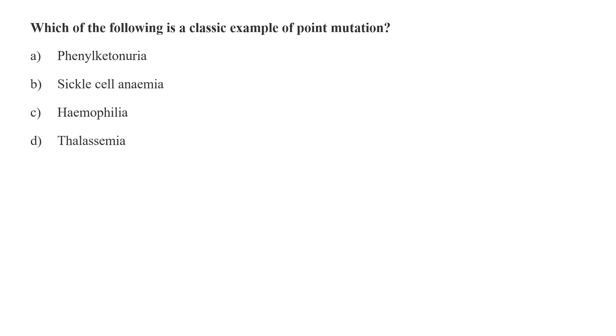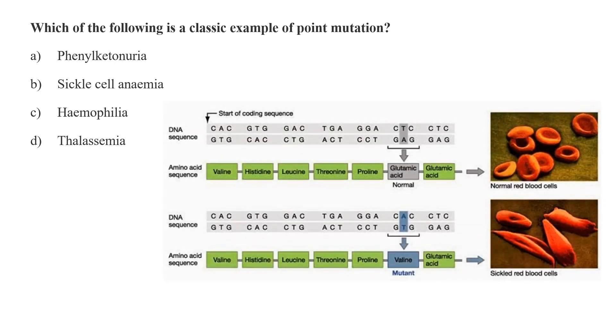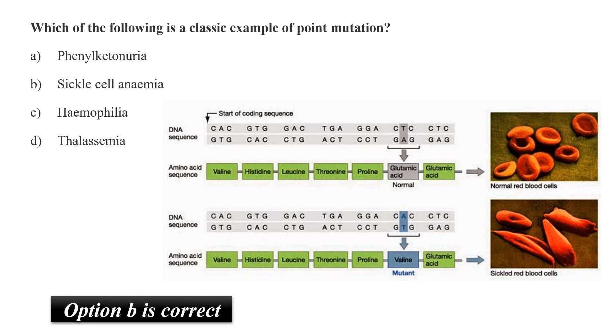Which of the following is a classical example of point mutations? Is it phenylketonuria, sickle cell anemia, hemophilia, or thalassemia? Sickle cell anemia is a classical example of point mutation. Point mutations mean a change in single nucleotide which is causing the altered protein expression. For example, in sickle cell anemia, when T in the coding strand is replaced by A, then there is a corresponding change in the amino acid. The glutamic acid is replaced by valine. Remember glutamic acid is a negatively charged amino acid while valine is a hydrophobic amino acid. So a change in the chemistry of amino acid causes the change in the shape of RBCs. Hence option D is the correct answer, that sickle cell anemia has altered protein expression due to point mutation.